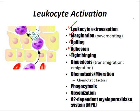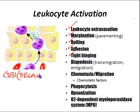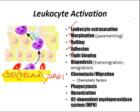Diapedesis is the transmigration of leukocytes as they pass between endothelial cells into adjacent interstitial tissue. This process involves integrins on leukocytes and CD31, also known as PECAM. PECAM plays the major role in diapedesis. You also need ICAM-1 on endothelial cells.